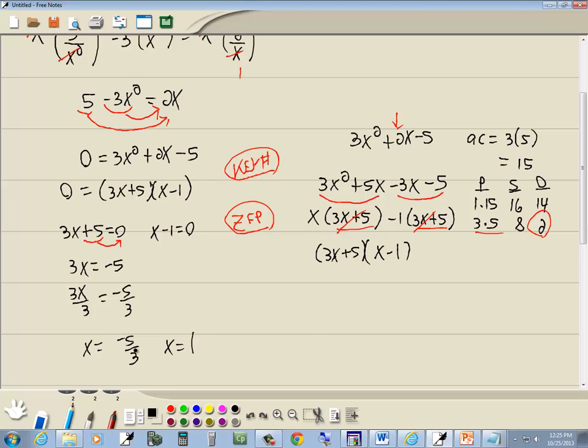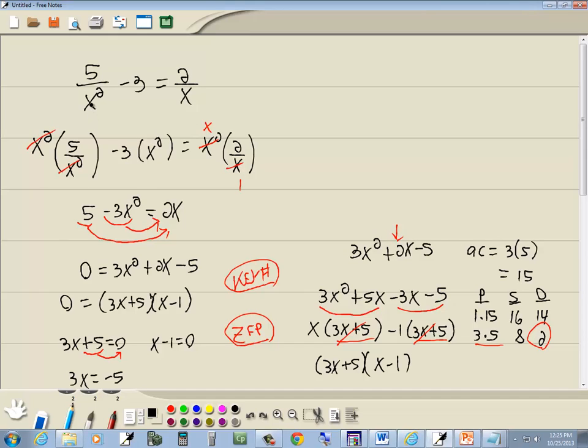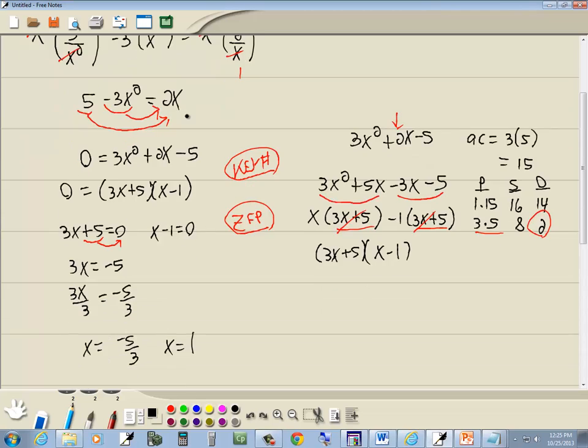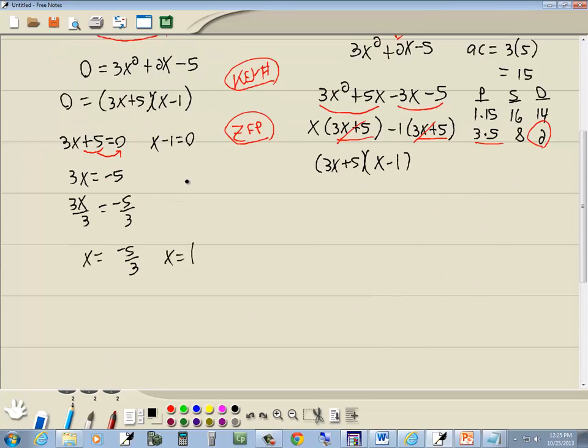Now the last thing we need to do is semi-check our answers. We don't need to fully check them, but we need to make sure these don't cause any denominator to equal 0. Let's look at negative 5 thirds first. If I put negative 5 thirds here, negative 5 thirds squared is not 0. If I put negative 5 thirds here, it's not 0. So we're fine. If I put 1 in, 1 squared is not 0. And if I put 1 here, it's not 0. Again, we could care less what it actually gives us. We want to make sure it doesn't cause any denominator to equal 0. So those would be our two answers.